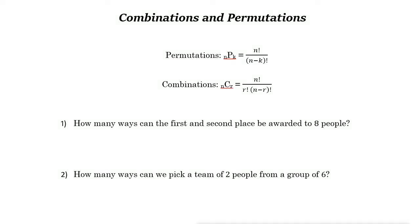Combinations and permutations. Permutation is the number of ways to choose a sample of k elements from a set of n distinct objects where order is very important. Replacements are not allowed for permutation, and we use this formula.